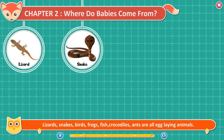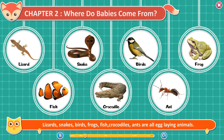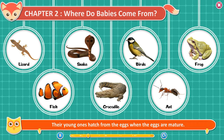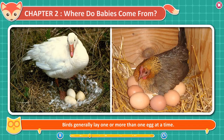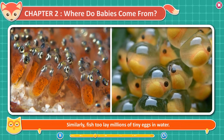Lizards, snakes, birds, frogs, fish, crocodiles, and ants are all egg-laying animals. Their young ones hatch from eggs when the eggs are mature. The number of eggs laid varies a lot. Birds generally lay one or more eggs at a time, and the eggs have a hard outer shell. Frogs lay thousands of eggs in water which are soft and jelly-like. Similarly, fish lay millions of tiny eggs in water.